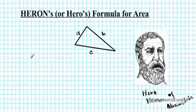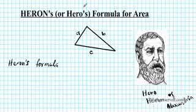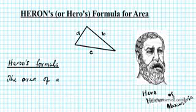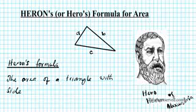Now this is what Heron's formula is. Heron's formula basically states that the area of a triangle with side lengths